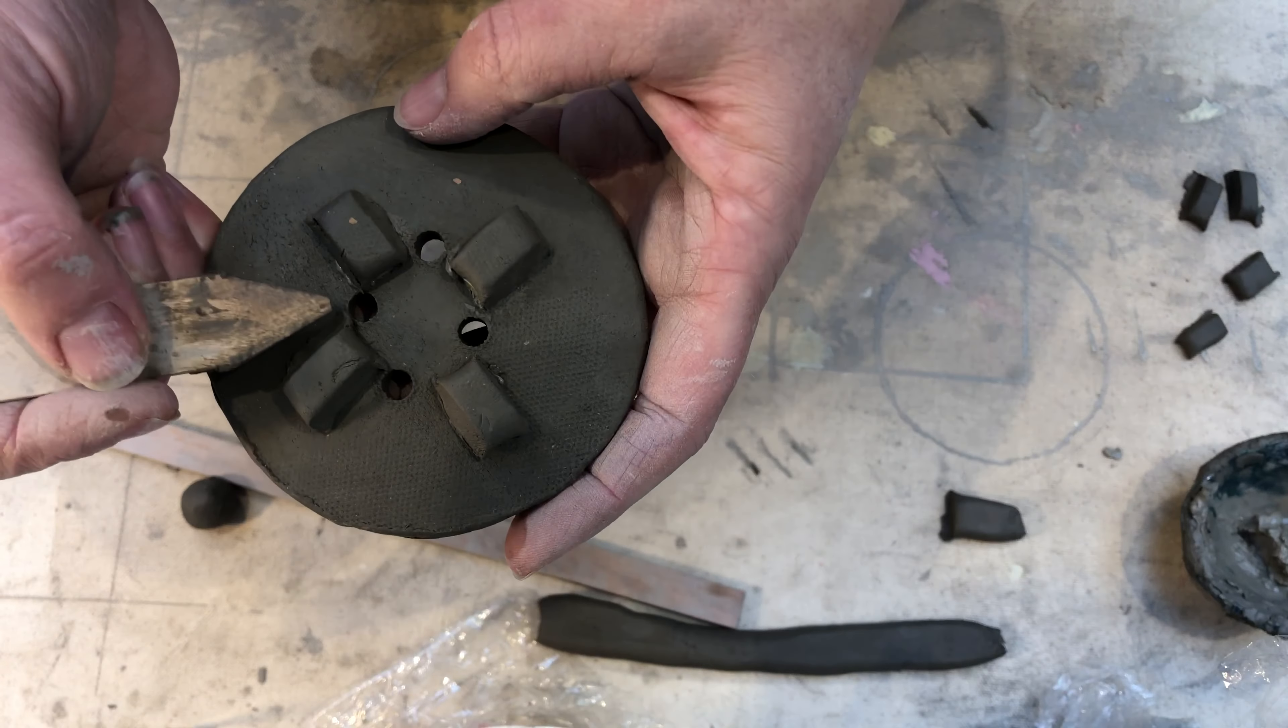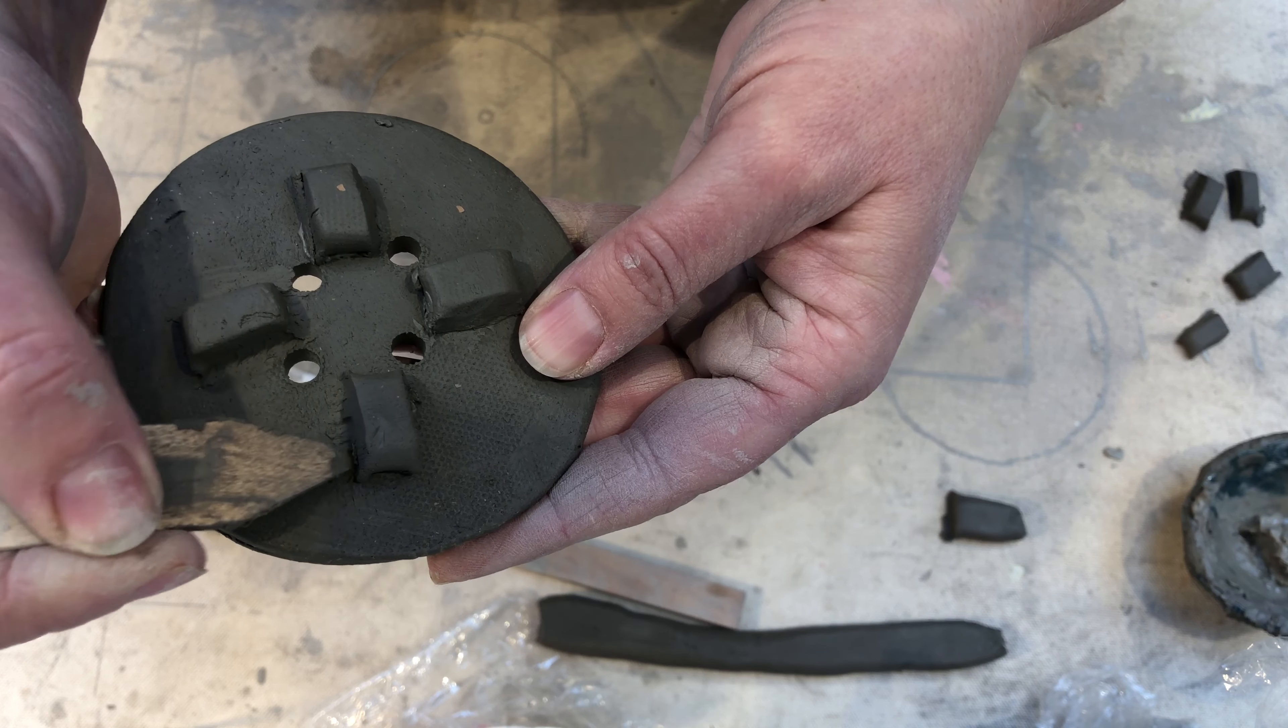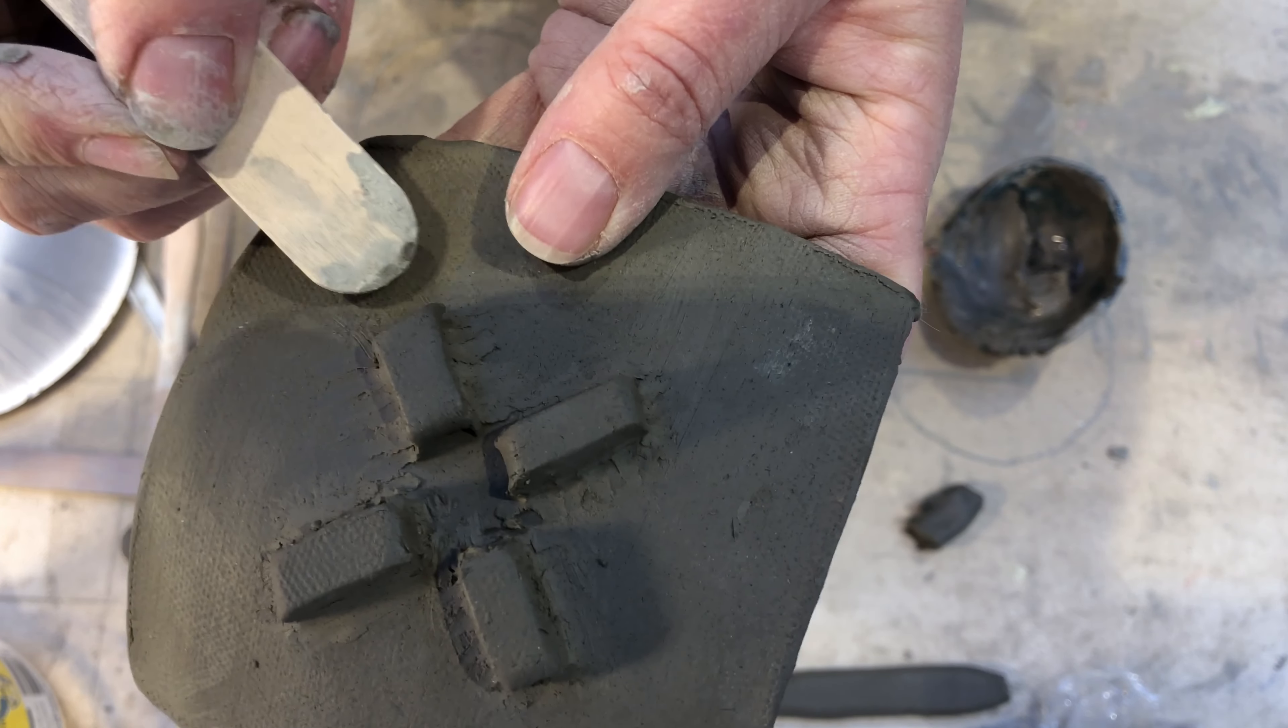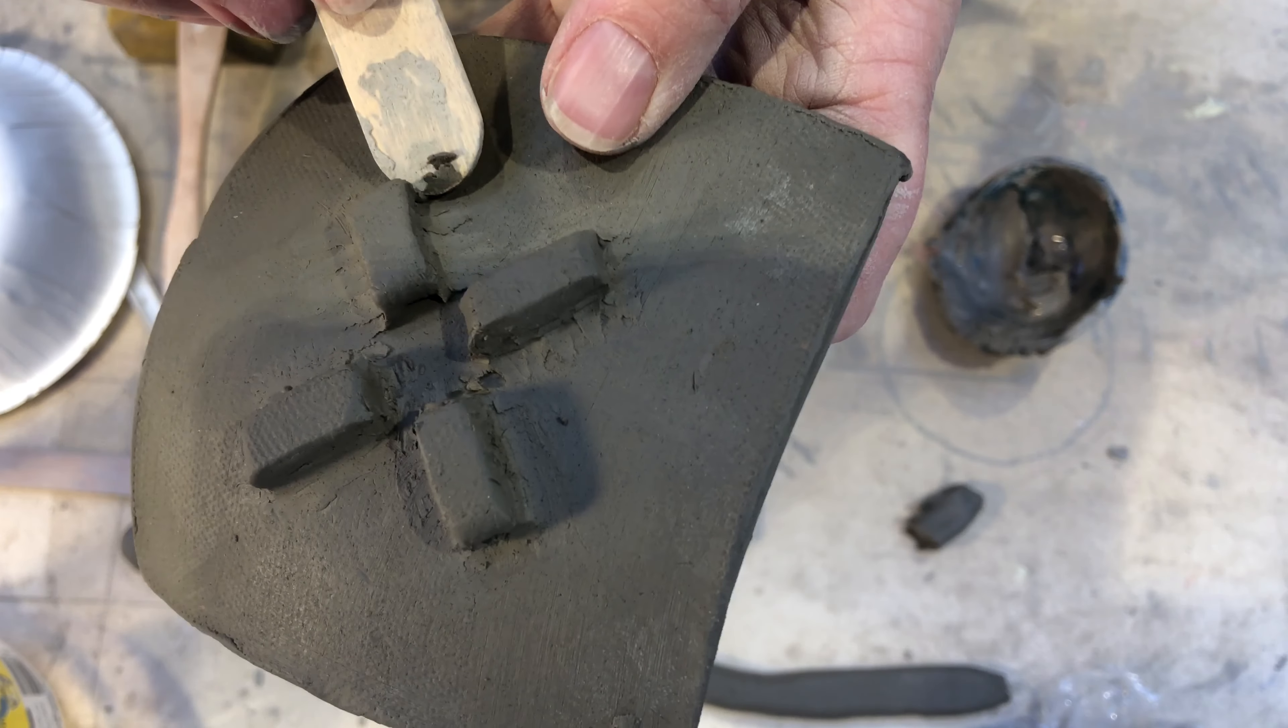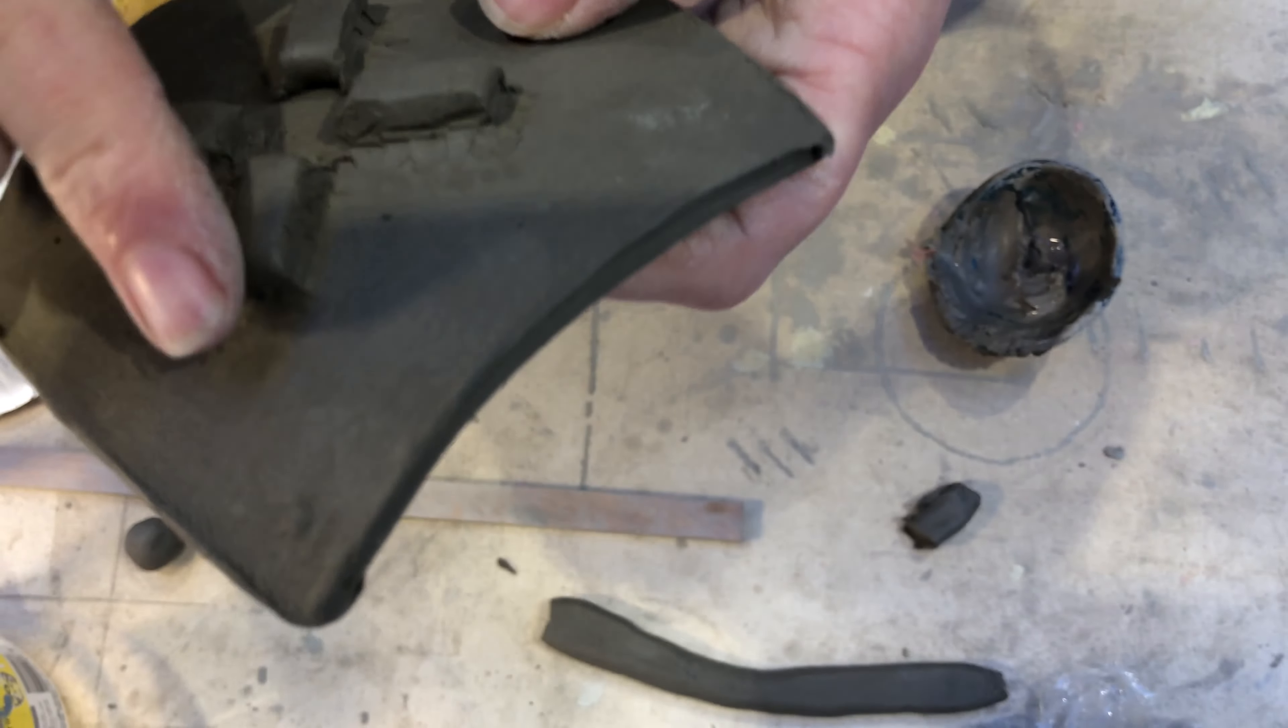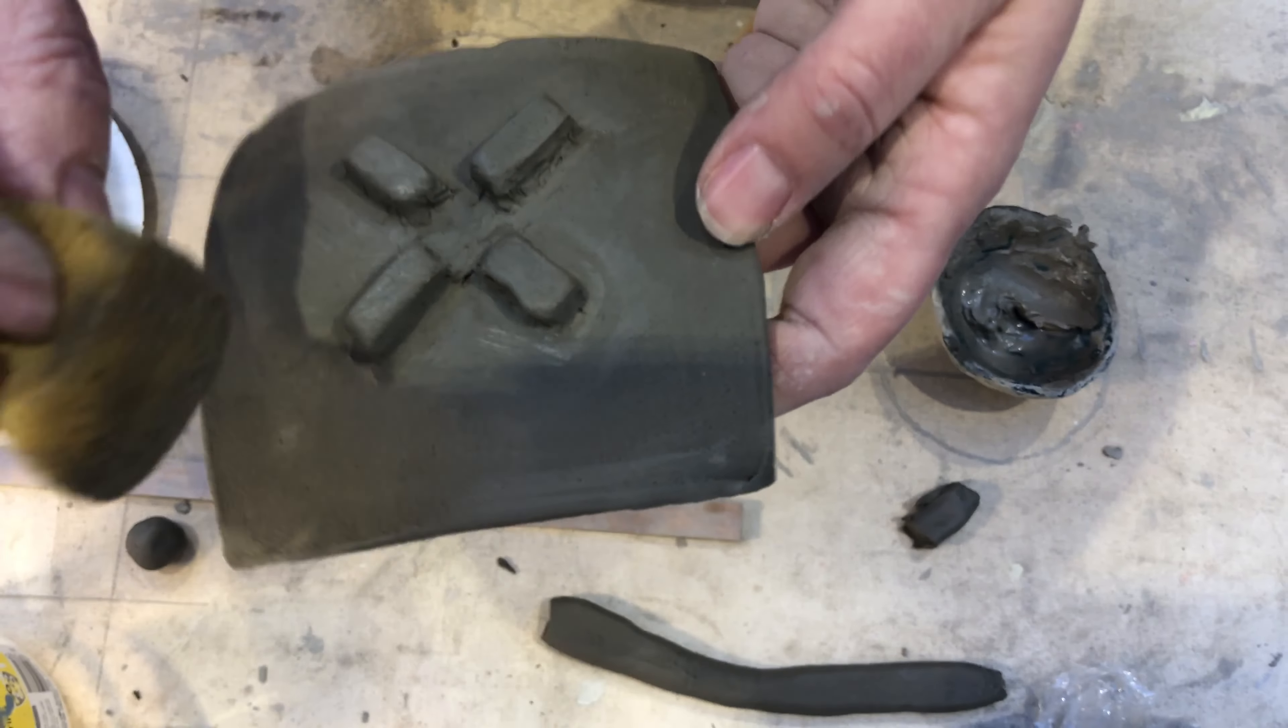Now we use this wooden tool to blend. You can use the tool and your fingers. Blend the edges of the feet into the base of the dish. To finish it off you can use the damp sponge to blend in as well.